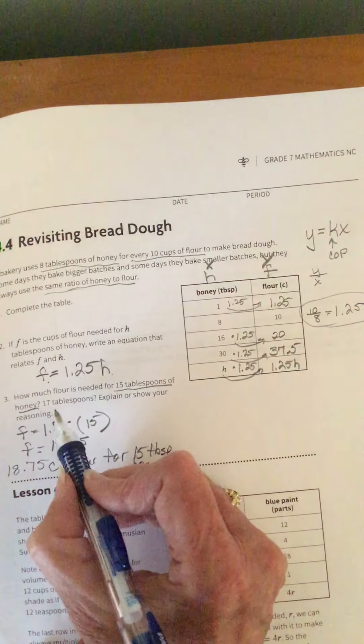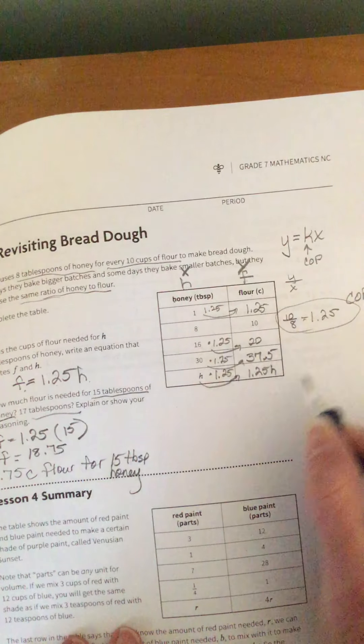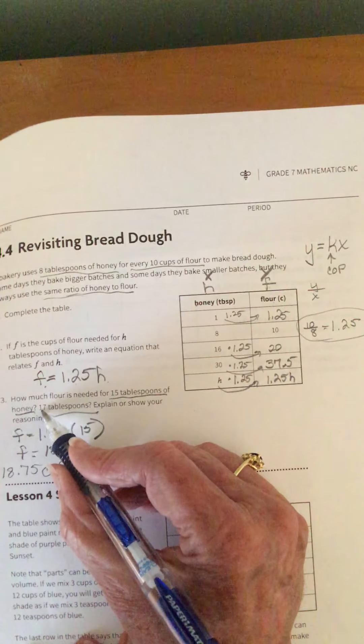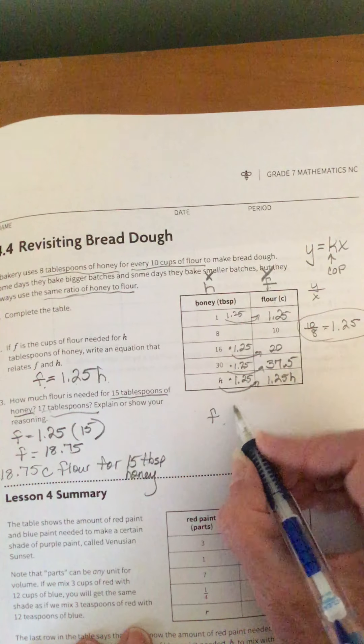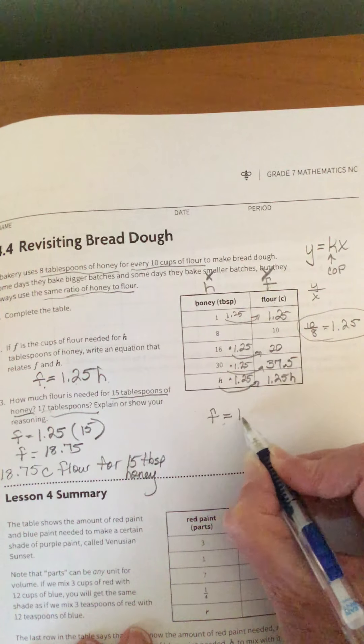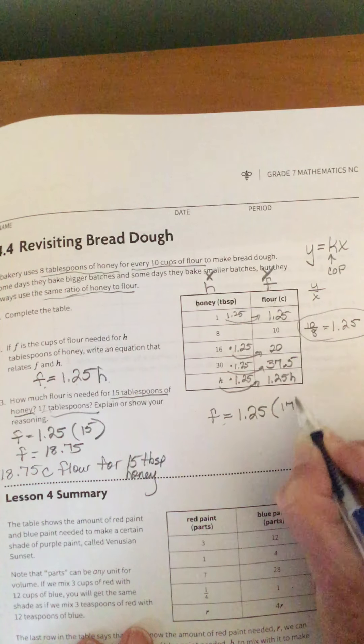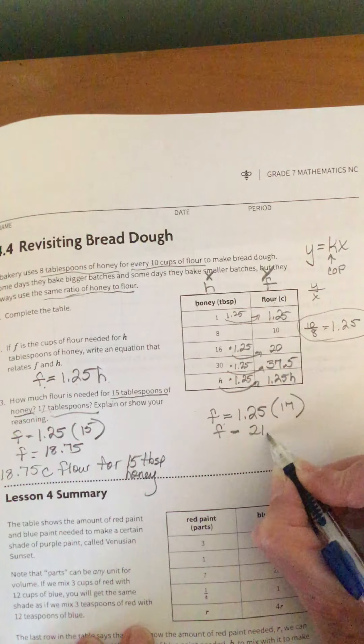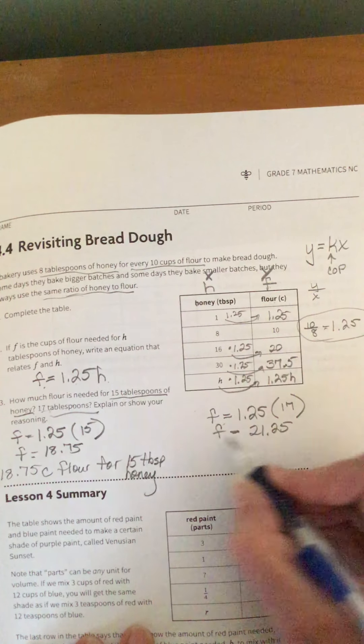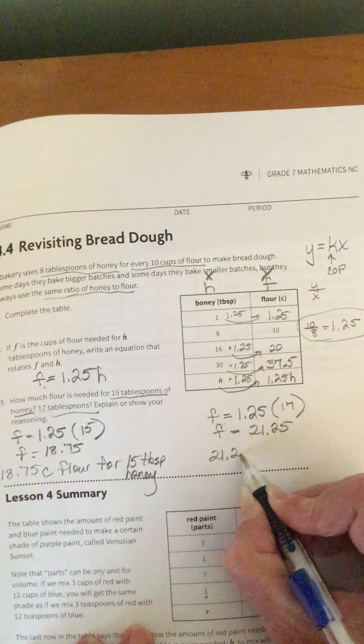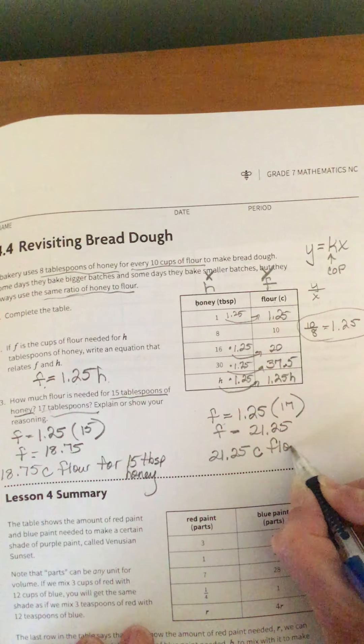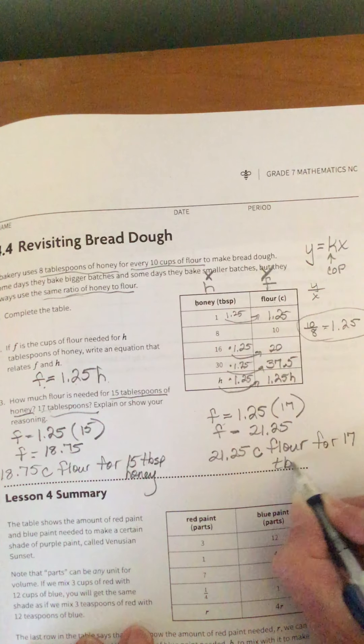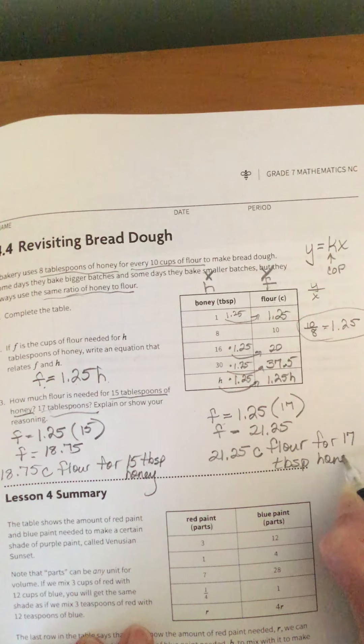Alright, then they're wanting about 17 tablespoons of honey. So once again, we're going to go to that equation that we created. F equals 1.25H. Well, this is 17 is honey. So we're going to replace H with 17. So F equals 1.25H times 17. That's going to give us F equals 21.25. So in terms of this story, it will take 21 and 25 hundredths cups of flour if we are using 17 tablespoons of honey.